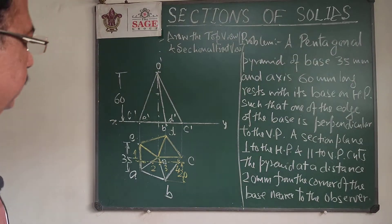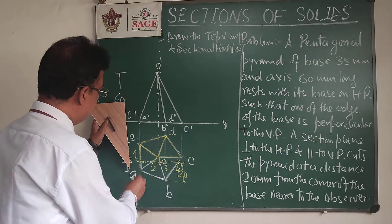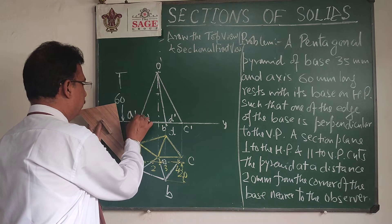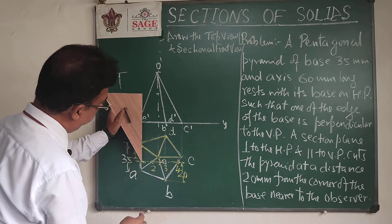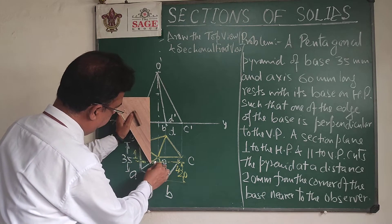The same method, draw perpendicular projectors. This one point will be on the same point, so this point will be also our 1 dash. This 2 will be on the line OA.